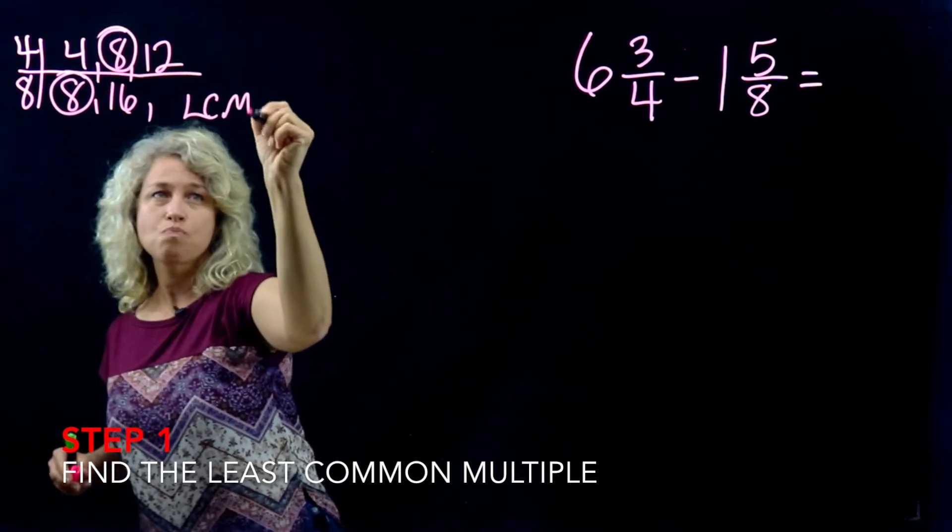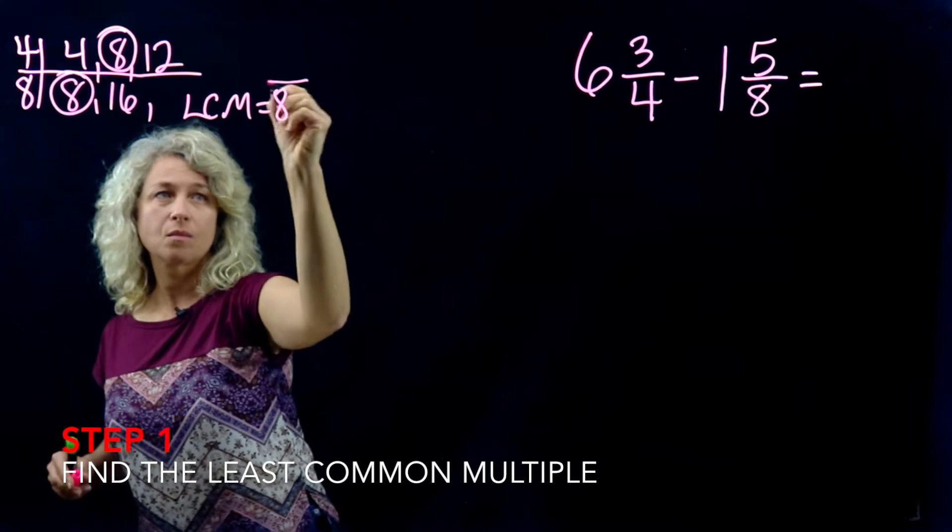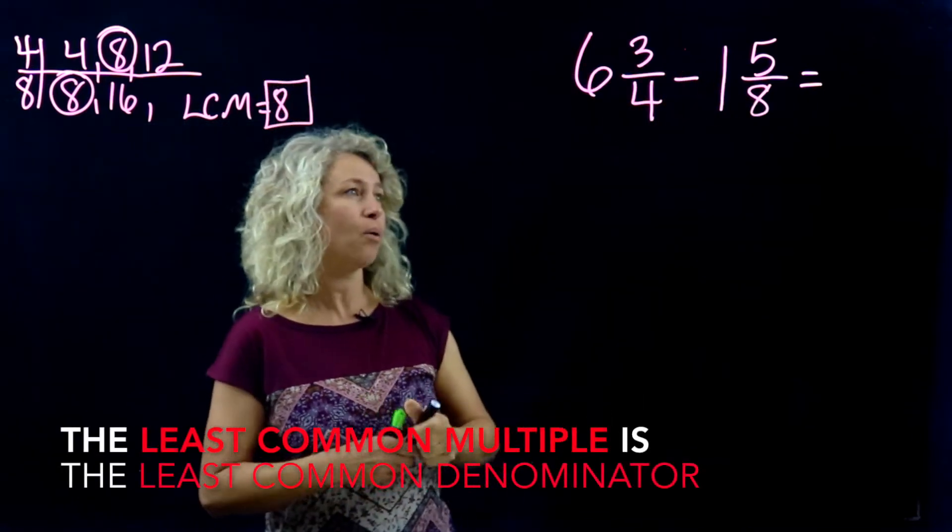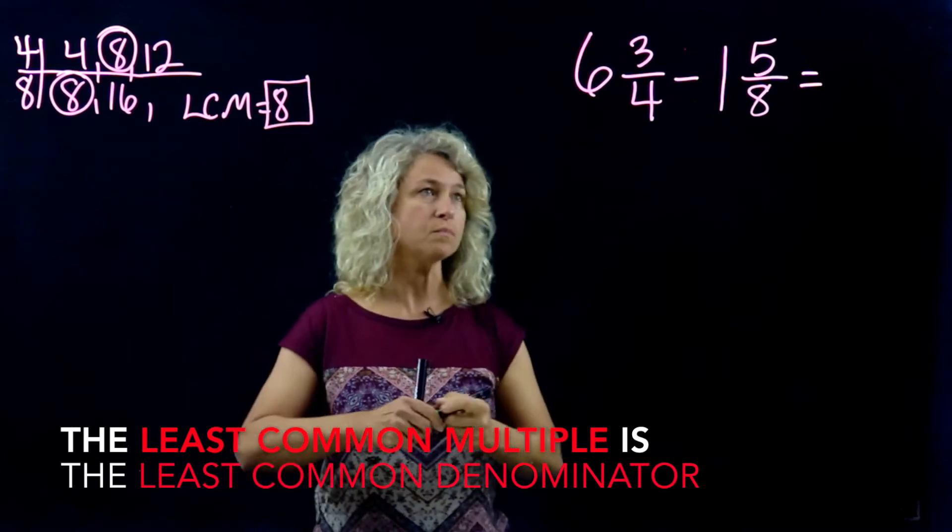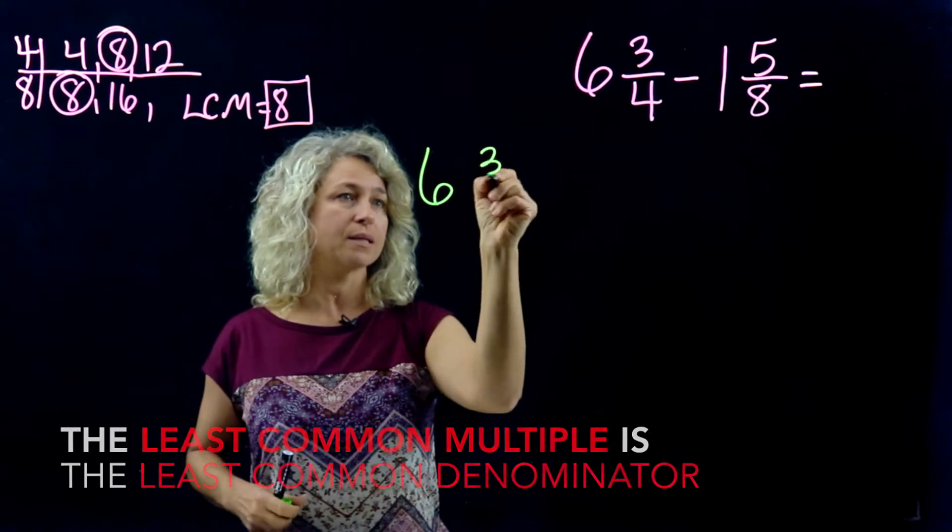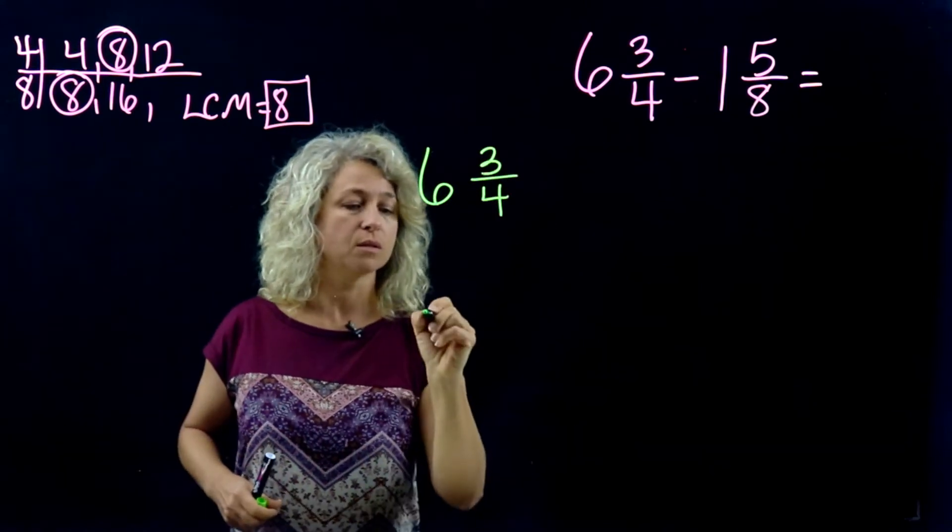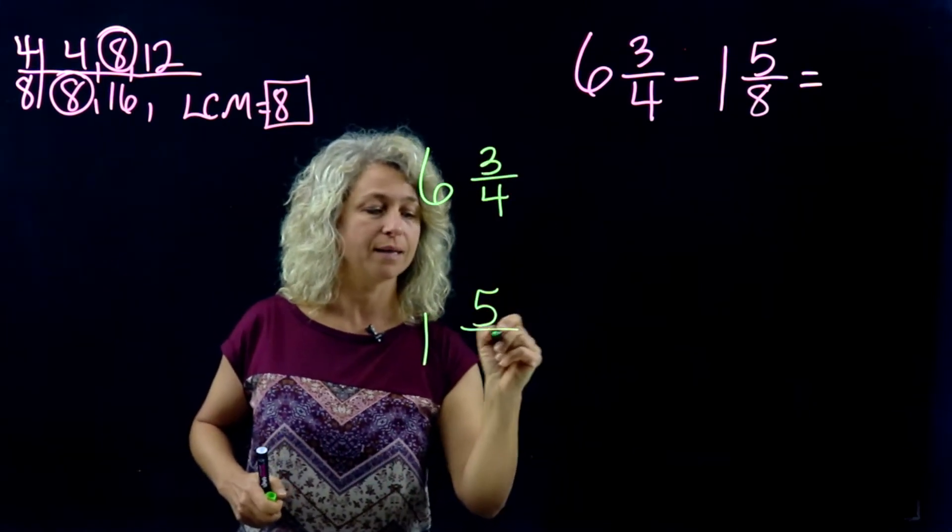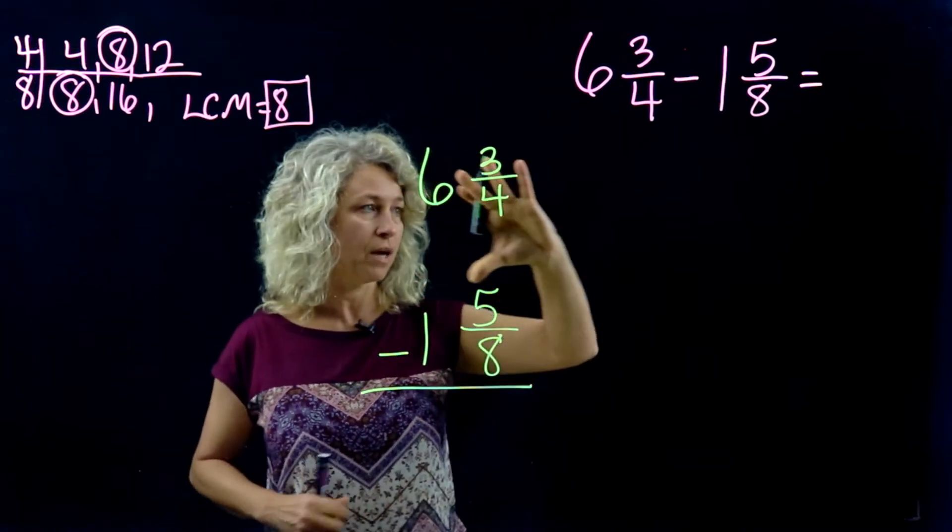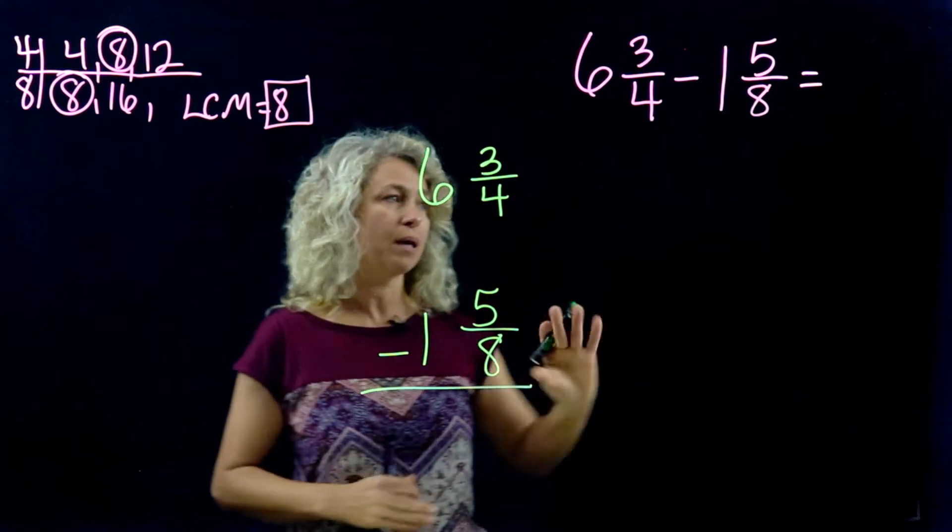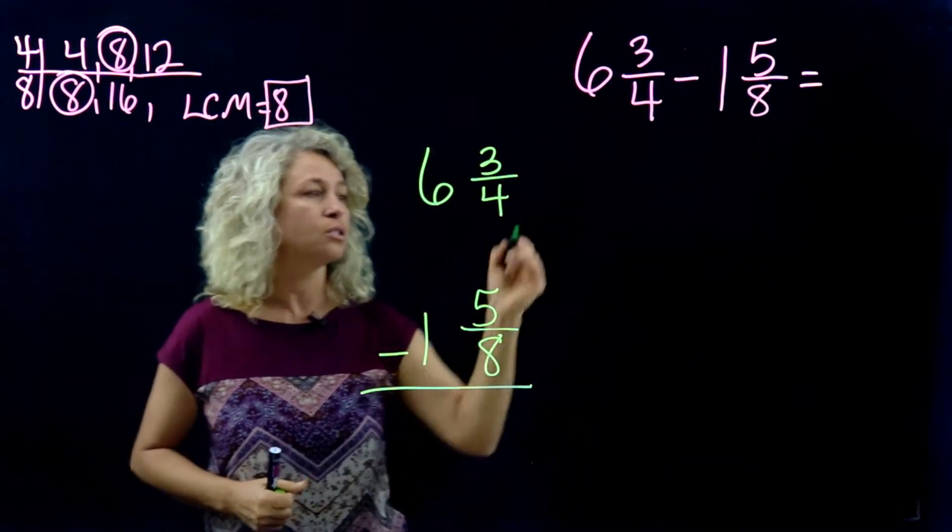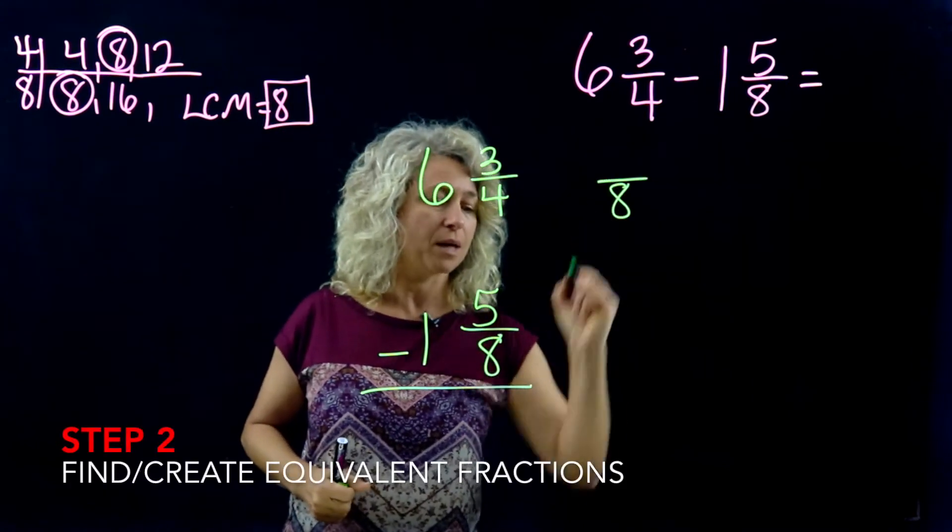I like to write them vertically, so I'm going to rewrite 6 3/4 and 1 5/8 vertically so that I'll have enough space when I make my equivalent fractions. They'll just slide right in. So make my denominators an 8.